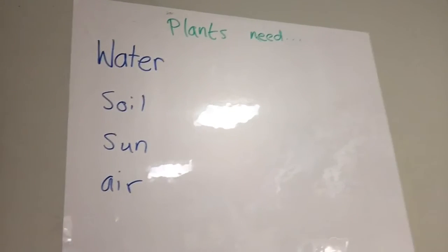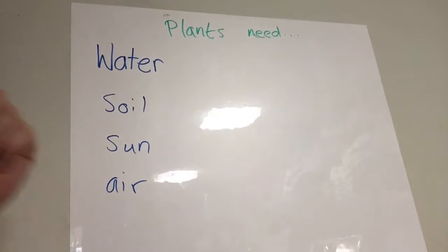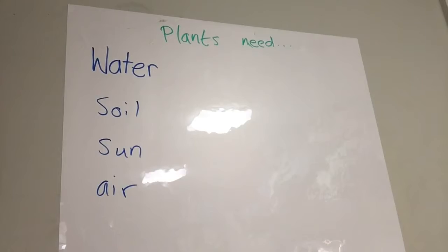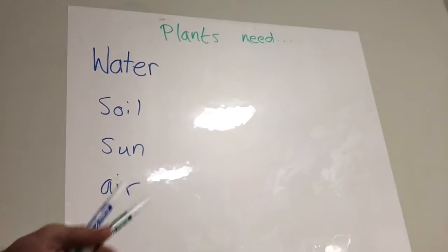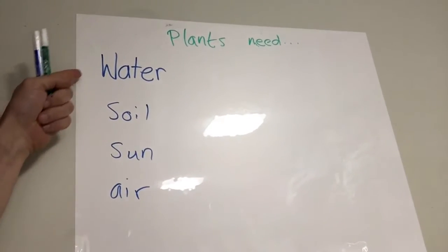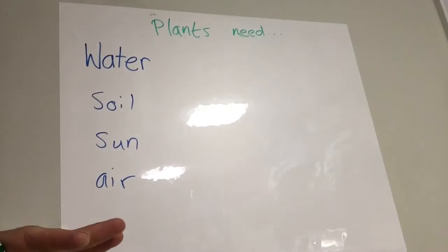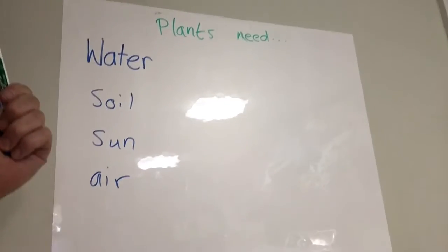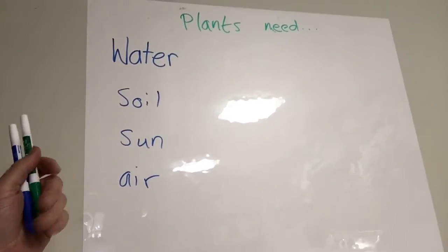We said five experiments, but there are only four things that we said plants need. What we're going to do is set up an extra experiment called a control. Whenever you're trying to work out which is the most important thing, you need to have a control, and the control is going to get everything. The point of the control is that we can see what would have happened if we gave all four things to the plant.